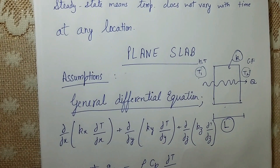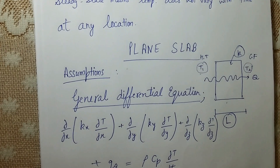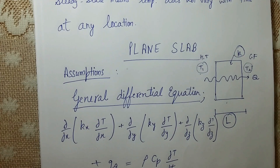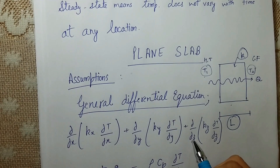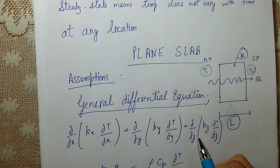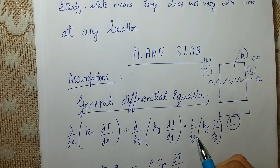The first assumption is one-dimensional conduction — the thickness L is small compared to dimensions in the y and z directions. The second assumption is steady state: temperature at any point within the slab doesn't change with time. The third assumption is no internal heat generation within the slab. The fourth assumption is that the slab material is homogeneous with constant density and is isotropic.